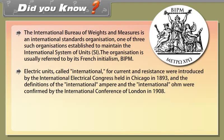Electric units called international for current and resistance were introduced by the International Electrical Congress held in Chicago in 1893, and the definitions of the international ampere and international ohm were confirmed by the International Conference of London in 1908.